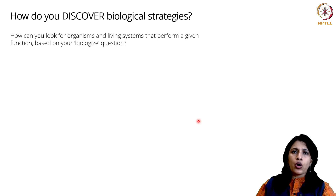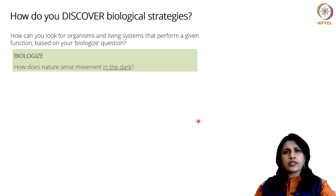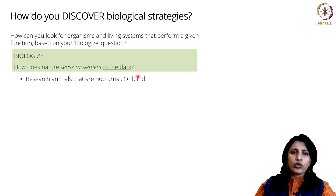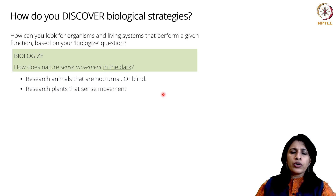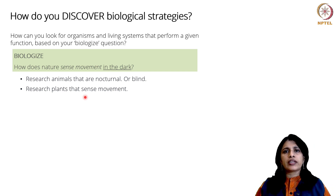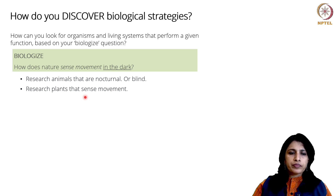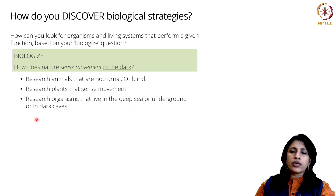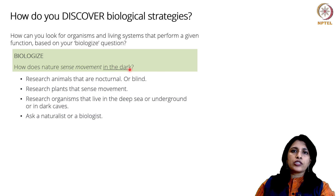How do you actually go about looking for such organisms? You could research animals that are nocturnal or blind — animals with those characteristics. When we say organisms, don't forget that plants are also organisms, and there are living systems — entire systems of living beings — that can also be considered. You could look for plants that sense movement, organisms in the deep sea, underground, or in dark caves. You could also ask a naturalist or biologist.